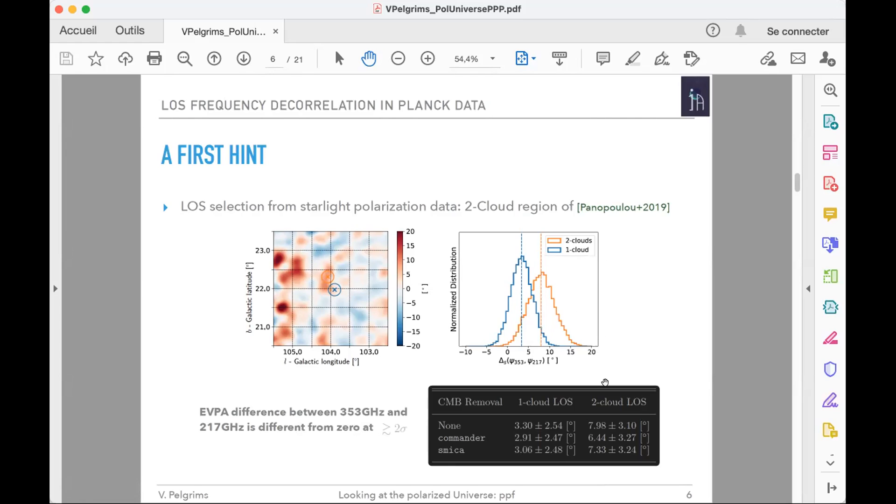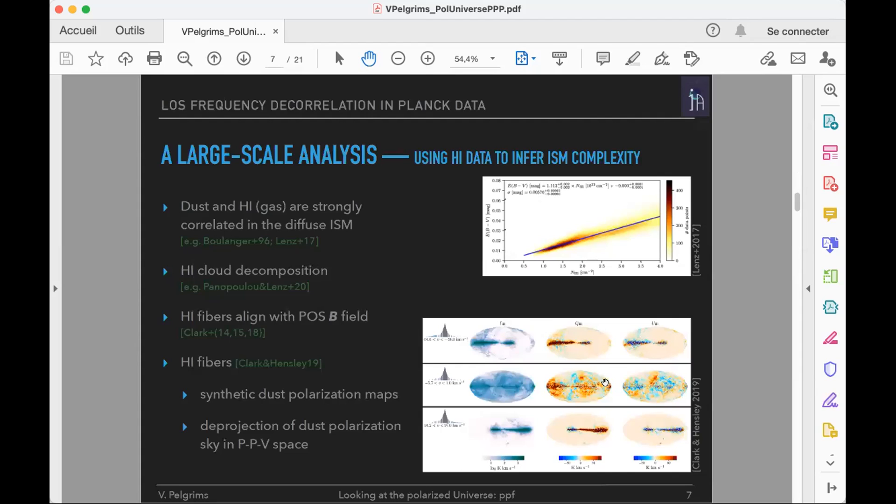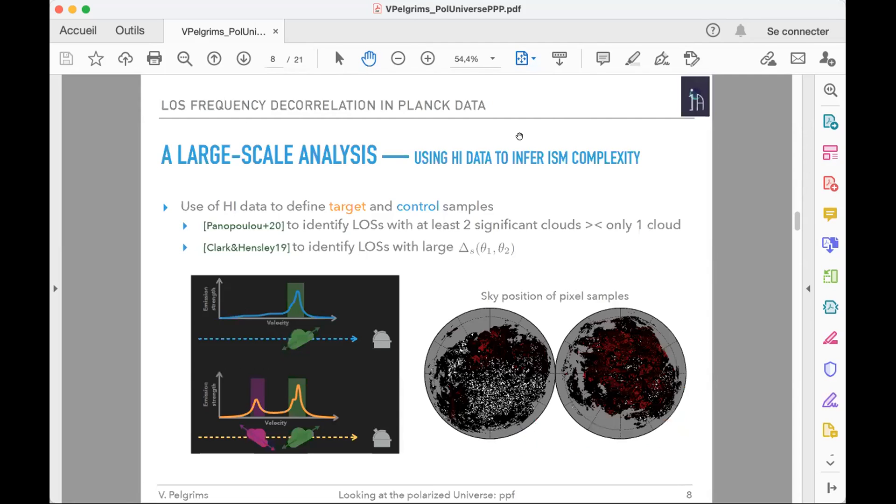We'd like to perform such analysis for a large area, but there is no large-scale survey of starlight polarization. What we can do is rely on HI data to infer ISM complexity. Gas and dust in our galaxy are very well correlated, so we can use HI data to predict dust emission and dust polarization emission if we consider HI fibers, those elongated structures in the HI data.